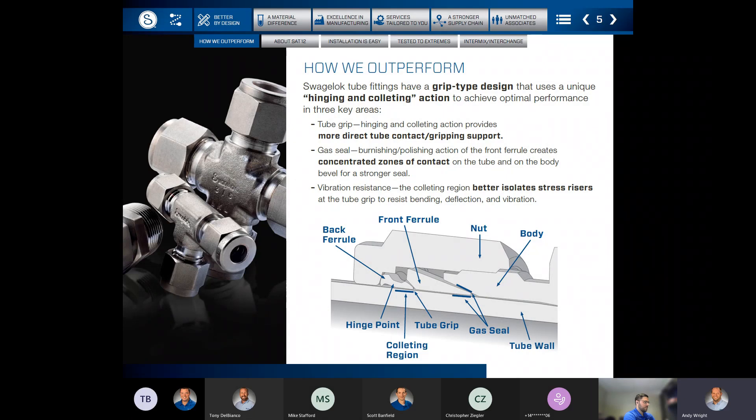From a design standard, the gas seal is achieved from the front ferrule. When the nut is pulled up one and a quarter turns from finger tight, which is the installation procedure,